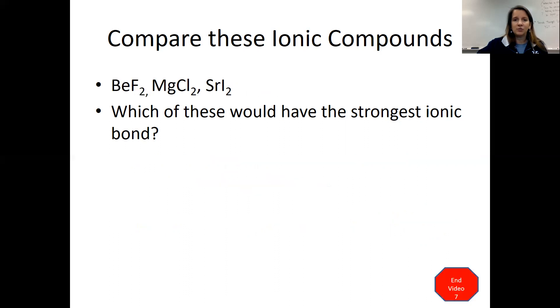Let's compare these ones then. BeF2, MgCl2, and SrI2. Which of these would have the strongest ionic bond? Well, all of these have the same charge difference because they all have a +2 cation and a -1 anion. So then that must be based off of the size.